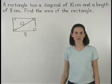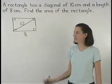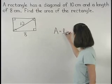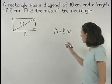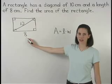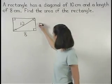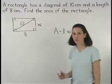Remember that the formula for the area of a rectangle is length times width. We're given that the length of the rectangle is 8 centimeters, but we don't know the width, which we can label in our diagram as W.